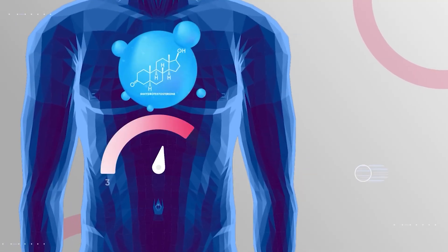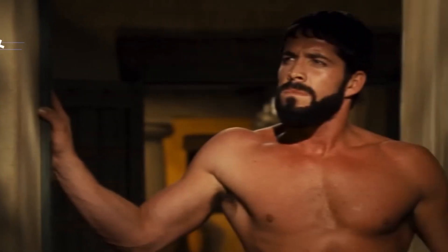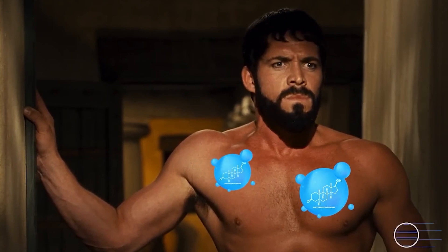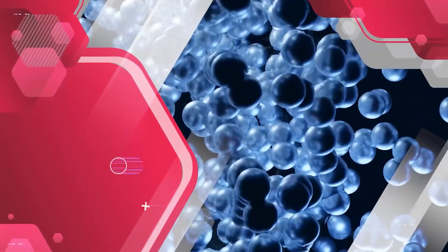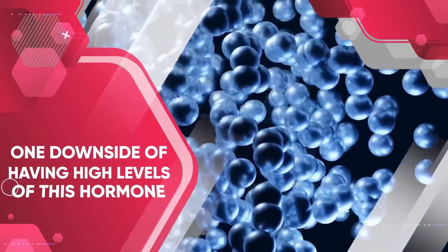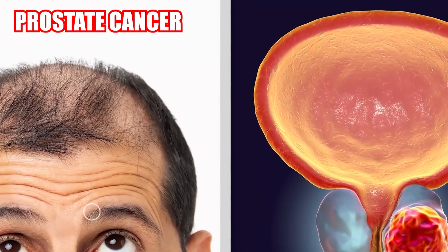DHT is thought to have 3-6 times the androgenic effects of testosterone in the body. However, DHT is far less effective in promoting muscle growth than testosterone. Aside from the benefits of DHT, one disadvantage of having high levels of this hormone circulating throughout your body is that it raises the possibility of hair loss and, most likely, the danger of prostate cancer.